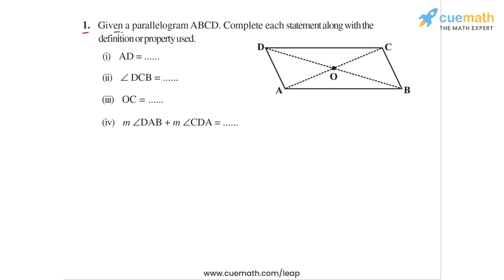Question 1 says: given a parallelogram ABCD — this parallelogram that we see here ABCD — complete each statement along with the definition or property used. There are four statements given to us. Each of the statements is incomplete, and we have to use the appropriate property of parallelograms to complete that statement.